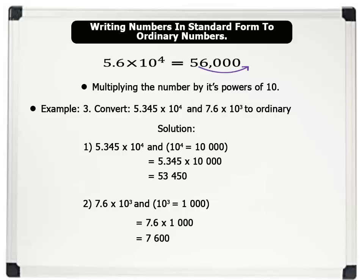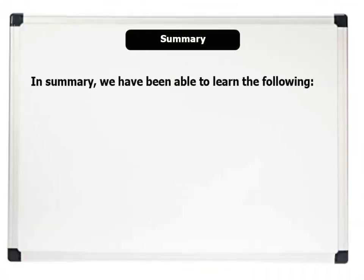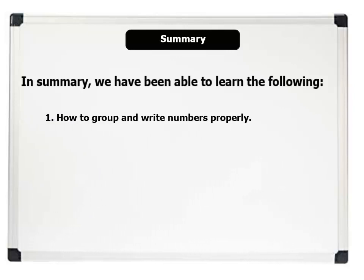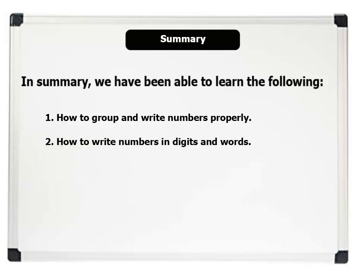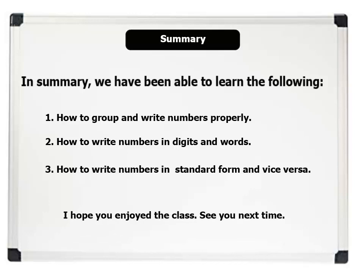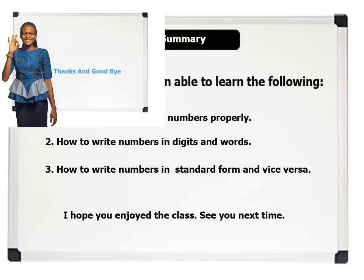That's very good. Let us now summarize. In this lesson we have been able to learn: one, how to group and write numbers properly; two, how to write numbers in digits and words; three, how to write numbers in standard form and vice versa. I hope you enjoyed the class. See you in the next lesson. Thanks and goodbye.